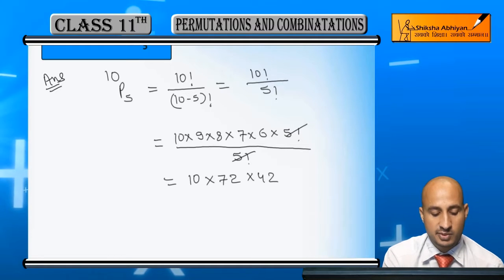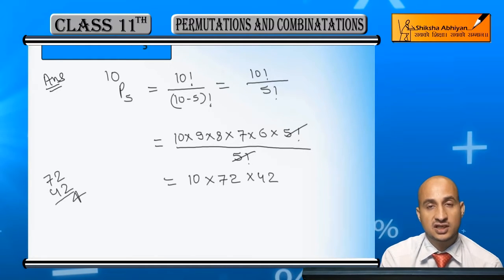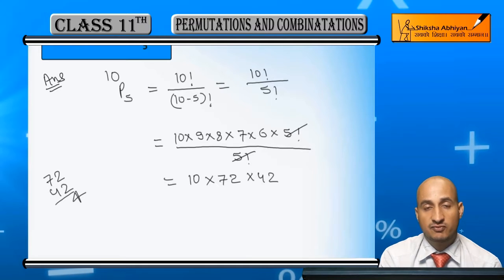Now 42 to 72, if you multiply it, I will do 72 and 42. This will come out 4 and 4 is 8. 7 into 4 is 28.